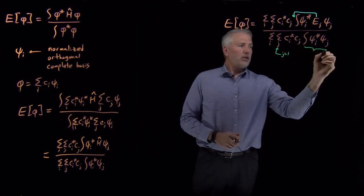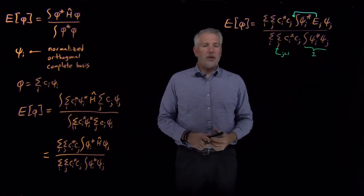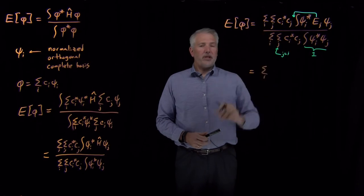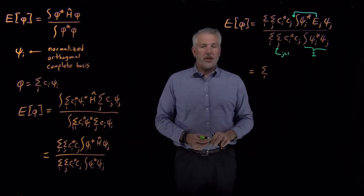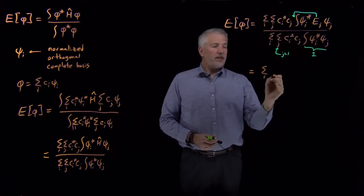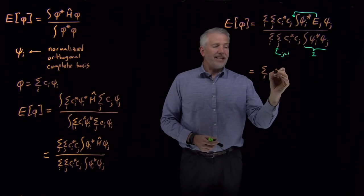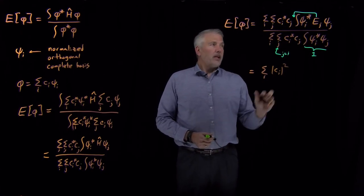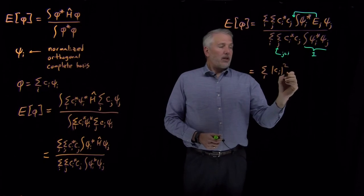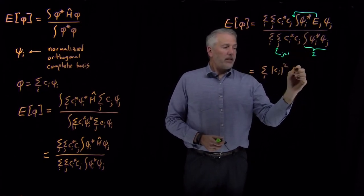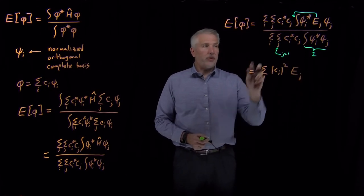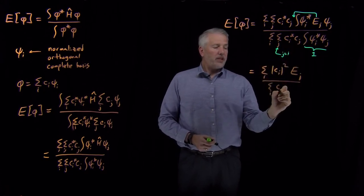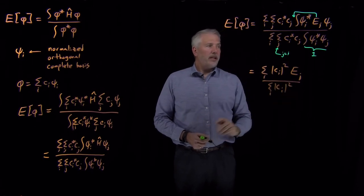When j equals i, the integral gives one. So all the j's become i's: ci star times cj becomes ci star times ci, which I can write as the magnitude of ci squared. The integral of psi i star times psi i is just one, and I have an energy E_i. In the denominator, the sum over i with ci star times cj becoming ci star times ci, and the integral becoming one.